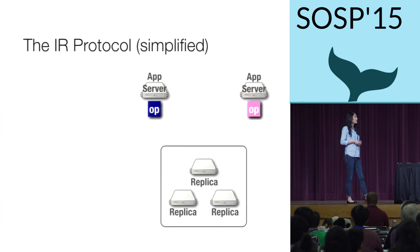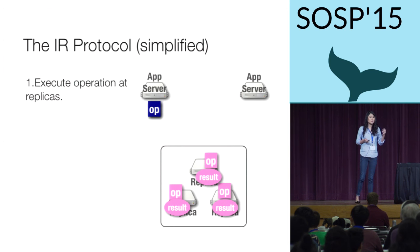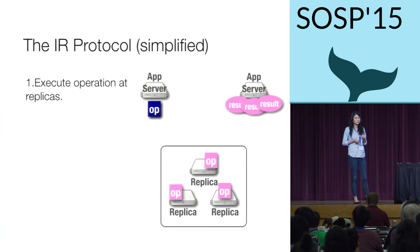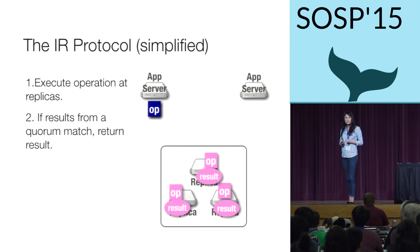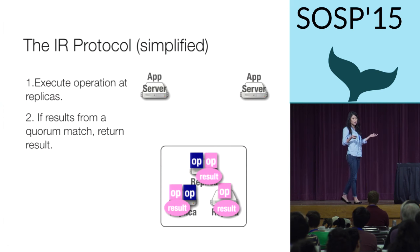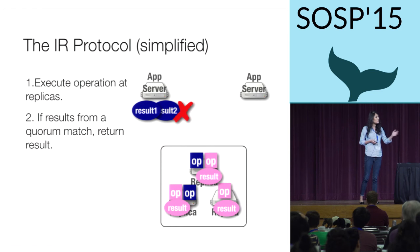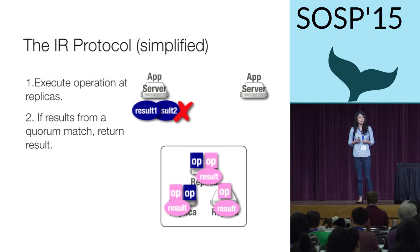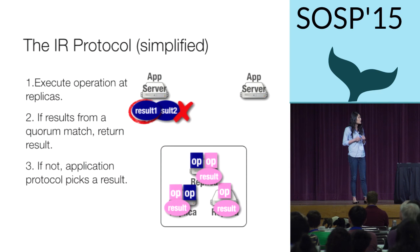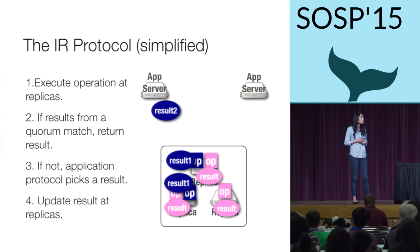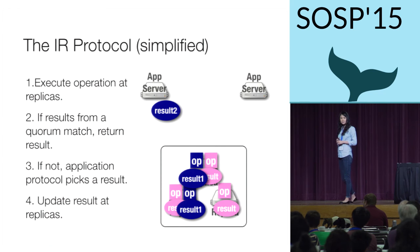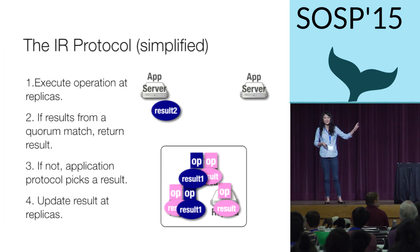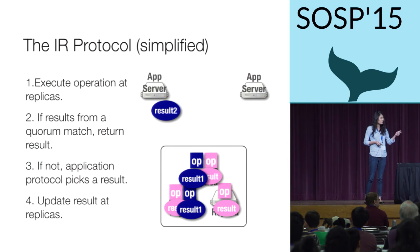On every operation, IR sends the operation to the replicas, executes it, and collects the results. If the results from a quorum of replicas match, the operation is considered successful and we return the result to the application protocol. If you execute operations at inconsistent replicas where results don't match, we return all results back to the application protocol, which selects one of the results. That result is then committed to the replicas before returning to the application protocol.